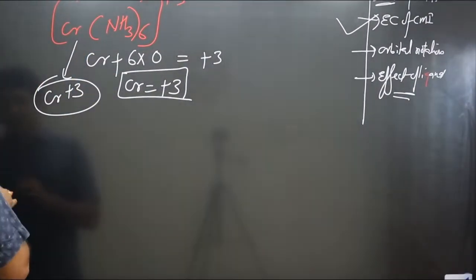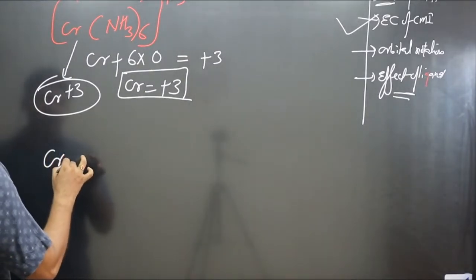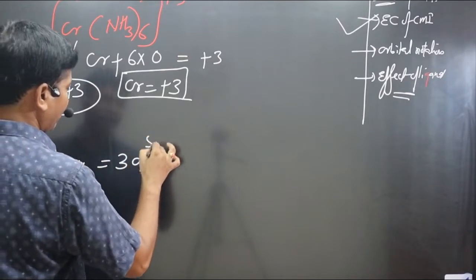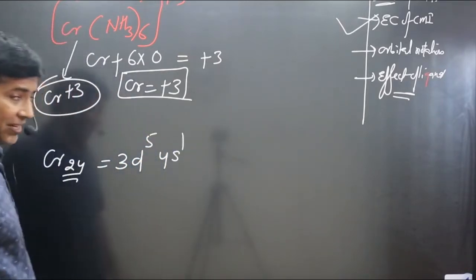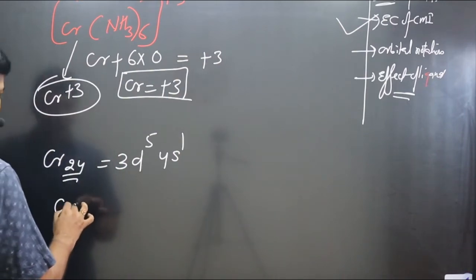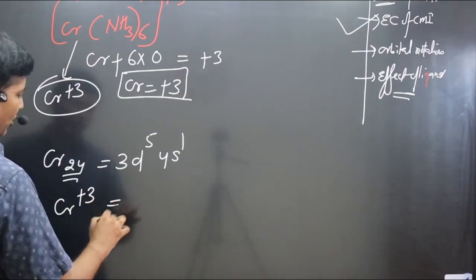Chromium atomic number is 24. If we write electronic configuration, it will be 3d5 4s1 due to half-field rule. Now it is losing how many electrons? Three electrons because it has plus three charge.